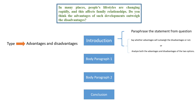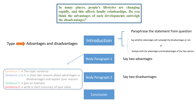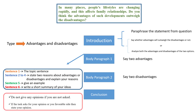In body paragraph 1, after stating the topic sentence, talk about two advantages. In body paragraph 2, after stating the topic sentence, talk about two disadvantages. Each body paragraph should contain: sentence 1, the topic sentence; sentences 2 to 4, state two reasons about advantages or disadvantages and explain your reasons; sentence 5, give an example; sentence 6, write a short summary of your ideas.